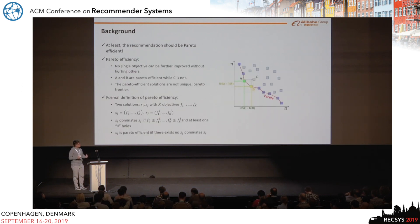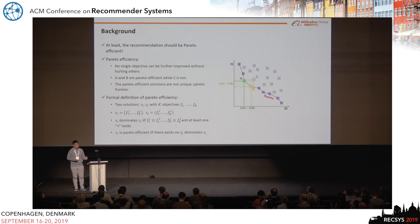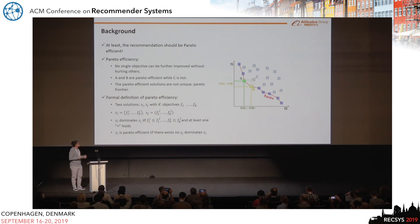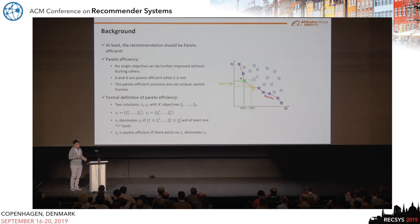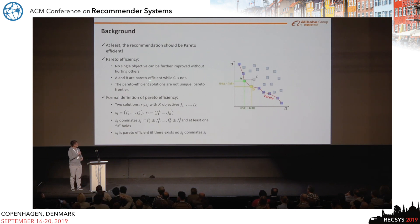So what should e-commerce recommendation look like? At least, I think it should be Pareto-efficient. In the case of Pareto-efficiency, we know that no single objective can be further improved without sacrificing others.